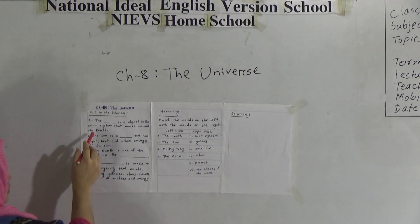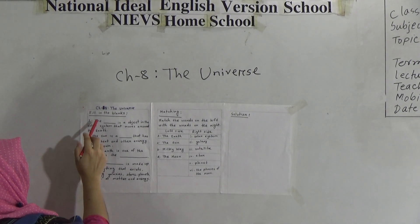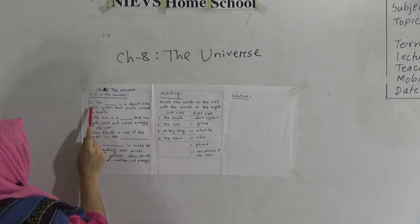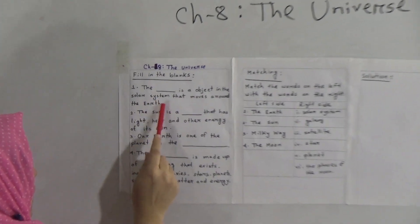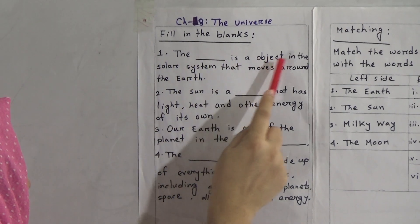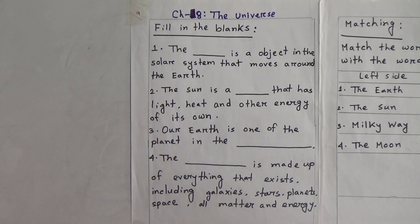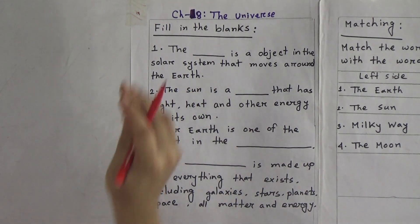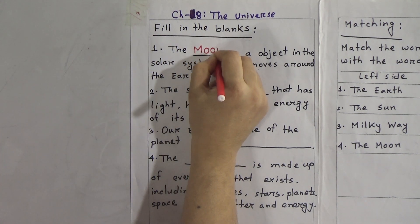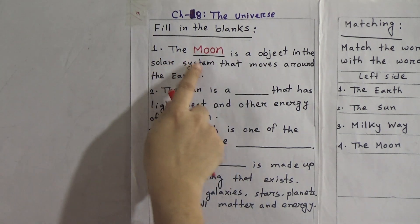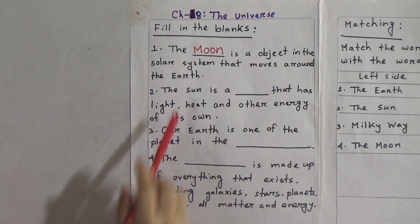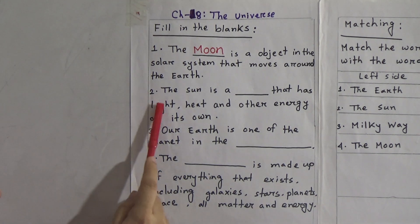First we will solve some fill in the blanks. Fill in the blanks number one: the blank is an object in the solar system that moves around the earth. Dear students, the answer will be the moon. The moon is an object in the solar system that moves around the earth. So write 'moon' for number one.